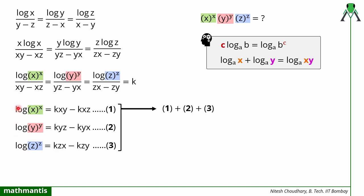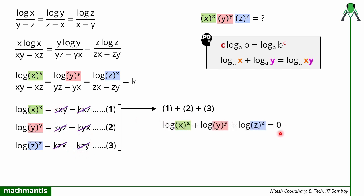Naming these equations one, two, and three, I now add them. On the left side I get the sum of the three log terms. On the right side, looking at the addition: kxy and kyx cancel out; kzx and kxz cancel out; kyz and kzy cancel out. So the entire right-hand side becomes zero. On the left side I have log of x raised to power x, plus log of y raised to power y, plus log of z raised to power z.